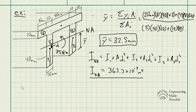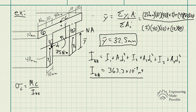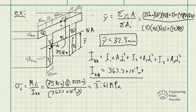Now applying the bending stress equation, let's solve for stress at the top — which we know will be in compression. C here is the distance from the neutral axis up to the top of the beam. Since we have y-bar and the given dimensions, C is easy to find. Plugging in all the numbers, the top of the beam experiences 3.61 megapascals of compressive stress.